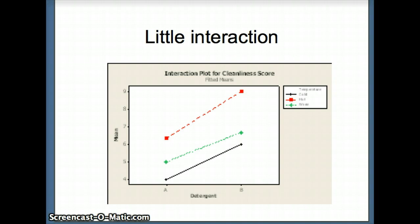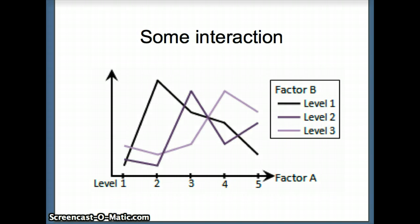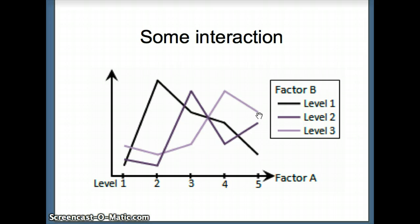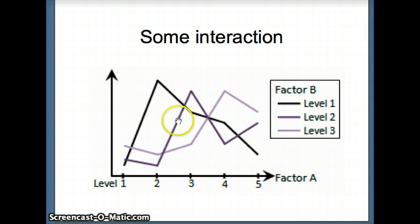Now let's extend that idea. Imagine we have five types of detergent, with level 1 as hot water, level 2 as warm water, and level 3 as cold water. Notice it keeps changing as to which temperature performs best. With the first detergent, level 3 appears best. With the second detergent, level 1 is best. With the third detergent, level 2 is best. The lines keep intersecting, indicating there may indeed be an interaction between the two factors we're examining.